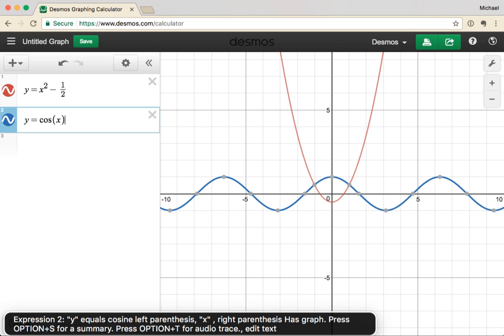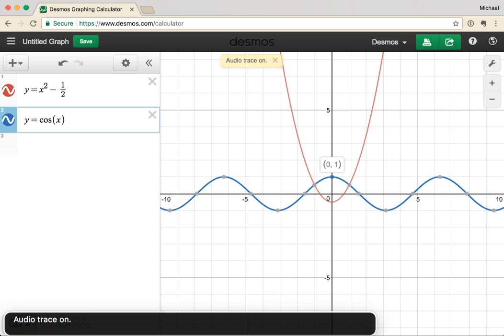Let's turn on audio trace by pressing option T. Audio trace on. I can now use the right and left arrows to navigate along the curve while the screen reader calls out the coordinates.